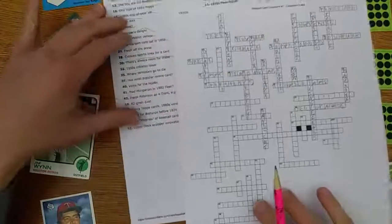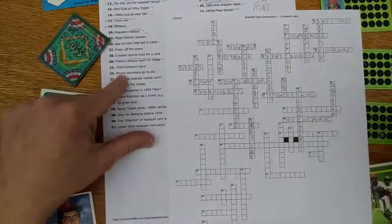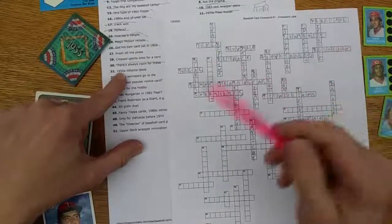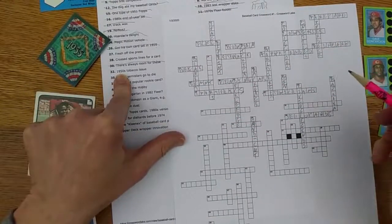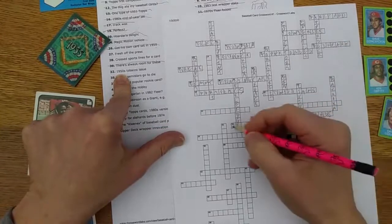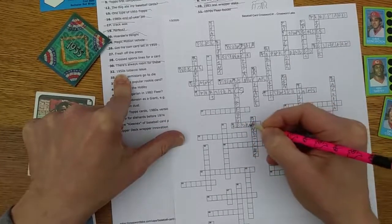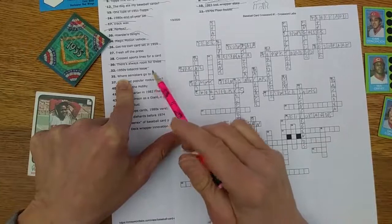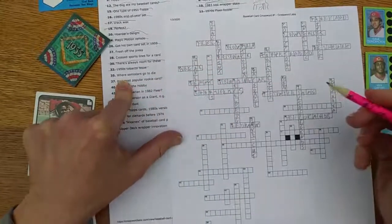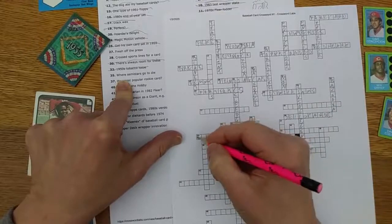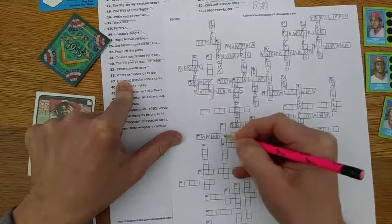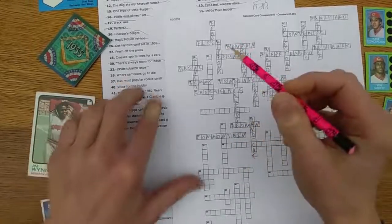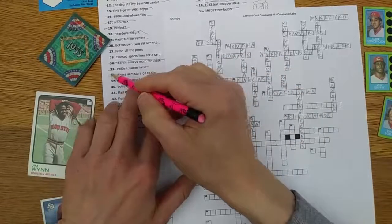I'm gonna flip over here to just the crosses so I don't run out of space. Sorry about my '81 scratch-offs there. 1950s tobacco issue - that's gonna be Red Men, I think, 32 across. This also gives me some time to think about some of the ones I couldn't remember up above. Where semi-stars go to die: That would be the commons bin, I think. You limp the semi-stars along for a few years hoping they'll transform into superstars, and when they don't, they usually slide into commons bin.